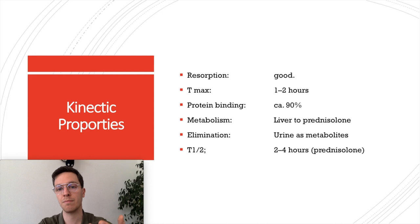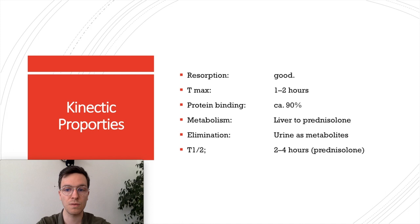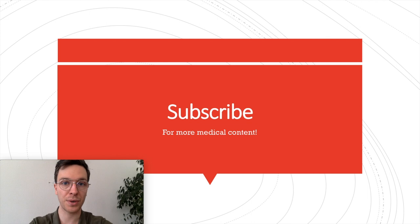Regarding kinetic properties: absorption of prednisolone is good, with a T-max within one to two hours. Protein binding is approximately 90%. Metabolism is performed by the liver, converting prednisone to prednisolone, which is the active form. Elimination is via urine as metabolites, and it takes the body roughly two to four hours to reduce half the dosage in the blood (half-life). This concludes the video — if you have questions, feel free to ask in the comments. Subscribe for more upcoming videos.